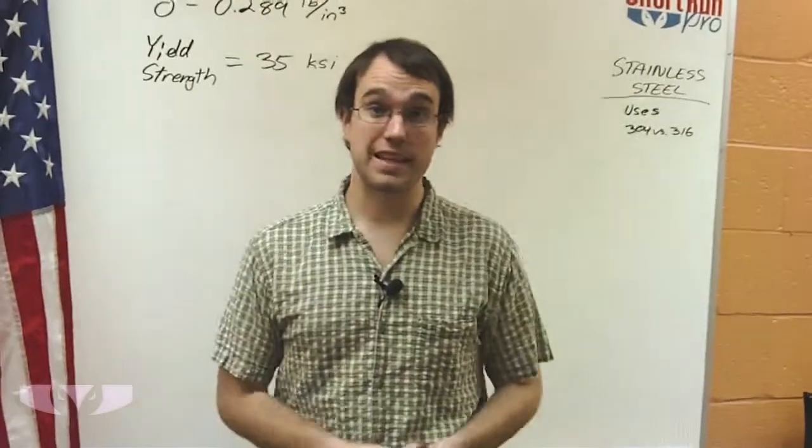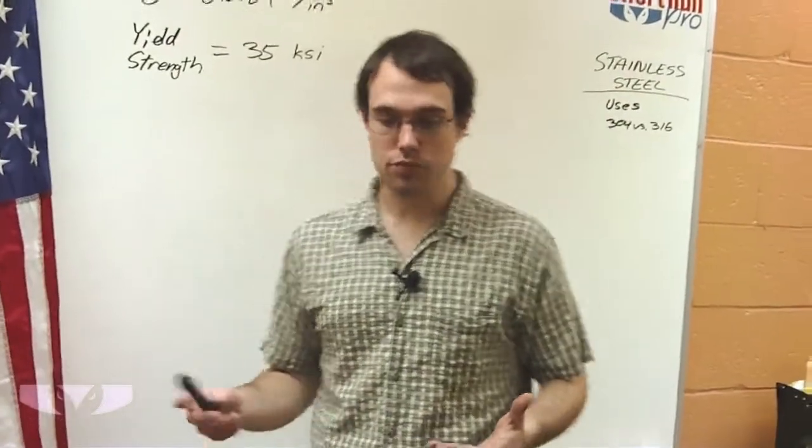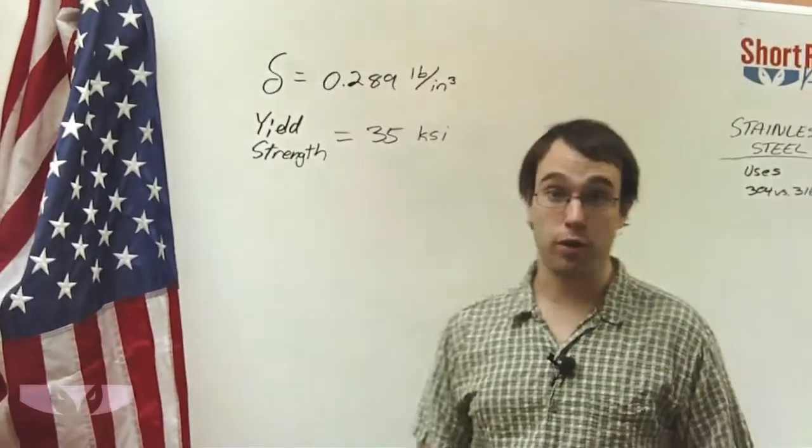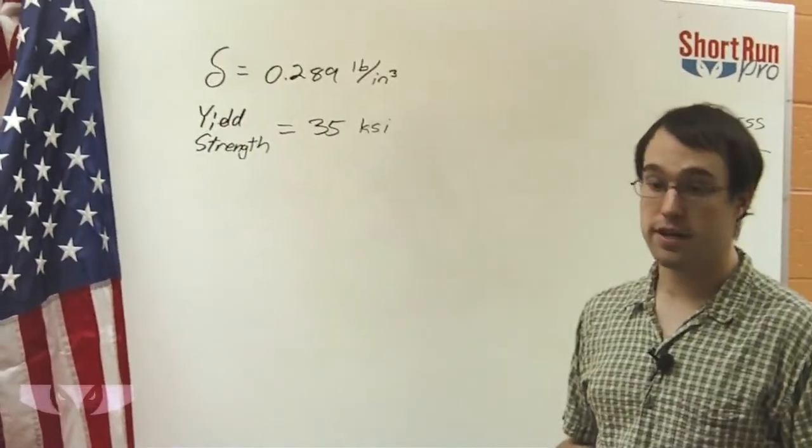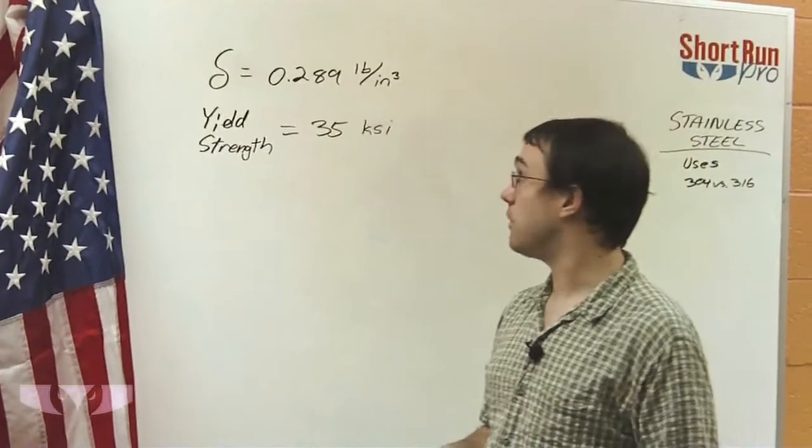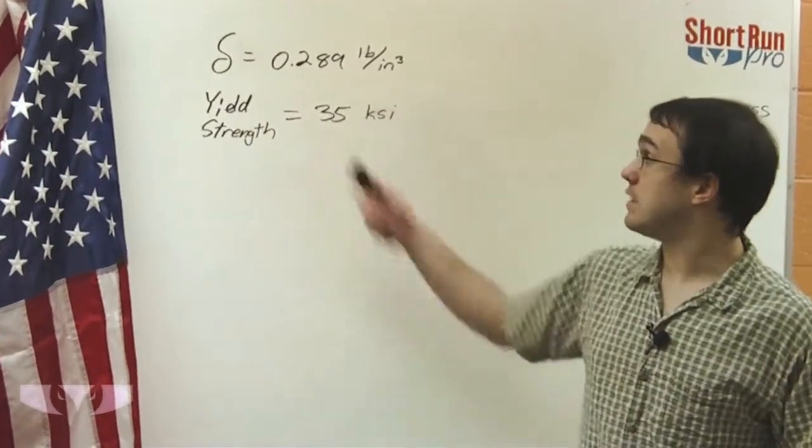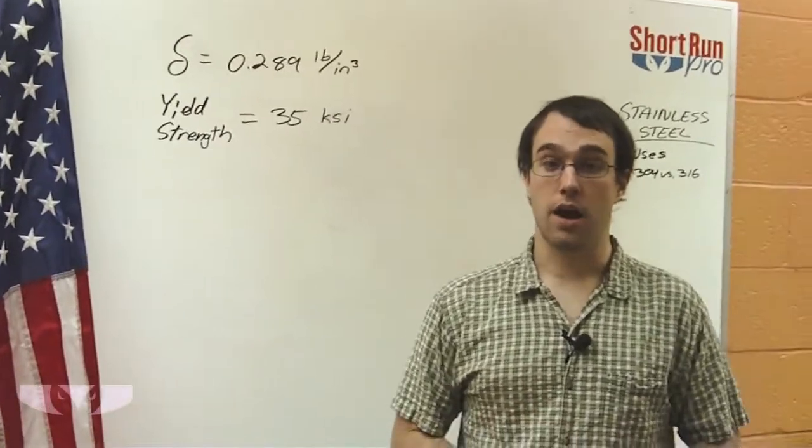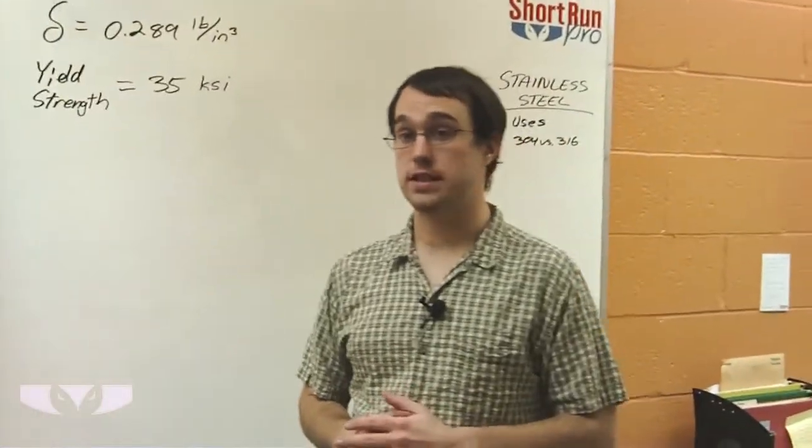A little bit about stainless steel material properties. Its density is just under 0.29 pounds per cubic inch, making it a little bit heavier than an equal amount of steel, and its yield strength is about 35,000 psi, making it a little bit stronger than steel as well.